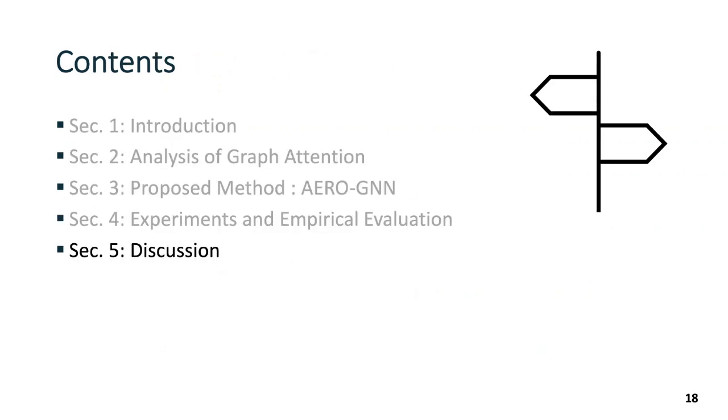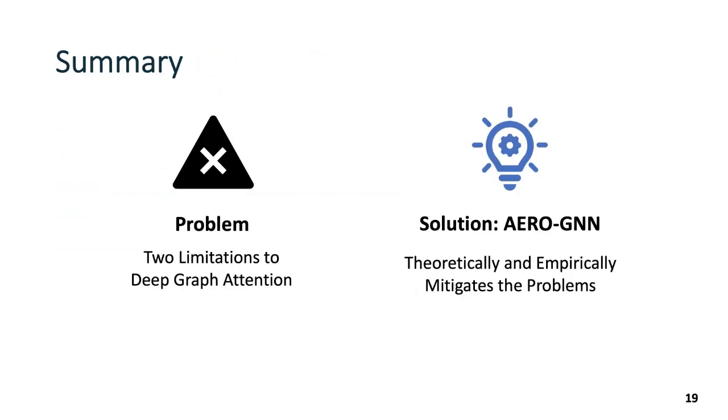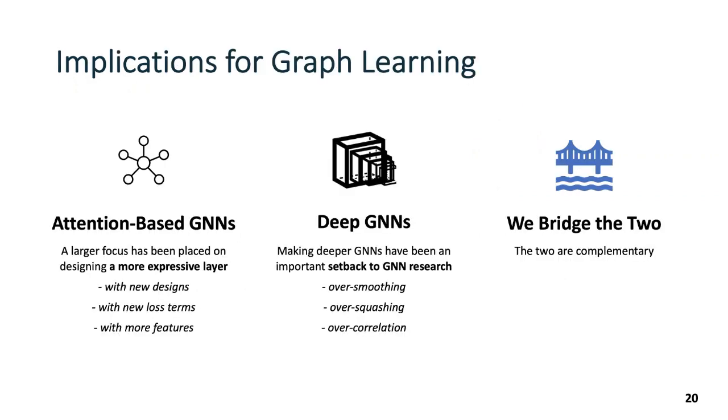Finally, we discuss our findings. In this work, we explore two limitations in building deep graph attention. Motivated by them, we propose ArrowGNN to theoretically and empirically mitigate the problems. The prior works on graph attention has placed larger focus on designing an expressive layer. On the other hand, making GNNs deeper has been an important setback to GNN research. In the present work, we bridge the two research directions and argue that the two are complementary to each other.